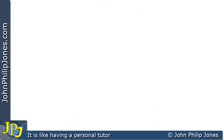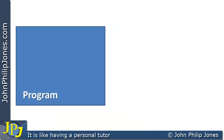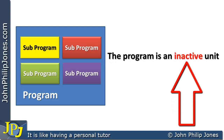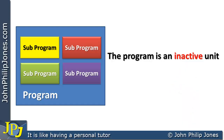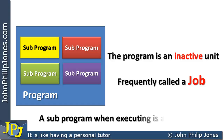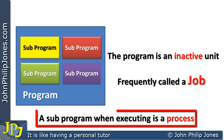The last video showed us that a computer program is actually made up of a number of sub-programs. With respect to operating systems, a program is regarded as an inactive unit — the machine code is available in RAM but it's not being fetched, decoded, and executed. Within operating circles, we often refer to a program as a job. When we take an individual sub-program and it is executing, a sub-program when executing is a process.